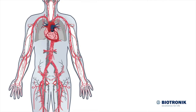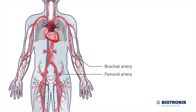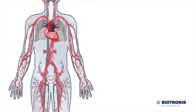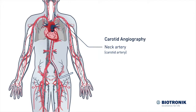A thin wire known as a catheter is advanced through the femoral artery, or less frequently through the brachial artery, into the vascular system, and up to the region being examined. The examination of the neck, or carotid artery, is called carotid angiography.